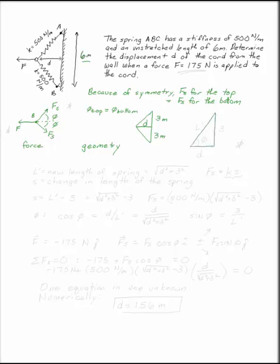So we'll blow that up a little bit. This is our angle phi. This is 3, and this is D. By the Pythagorean theorem, we can say that the new length of the spring, L prime, is the square root of D squared plus 3 squared.